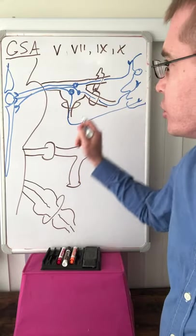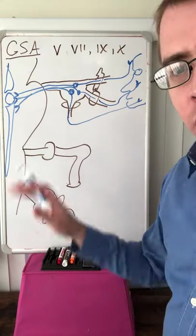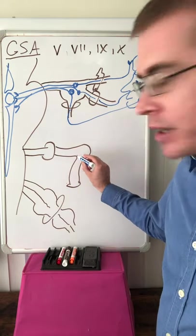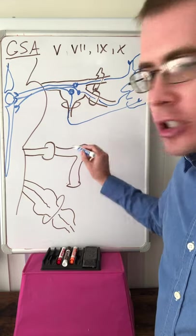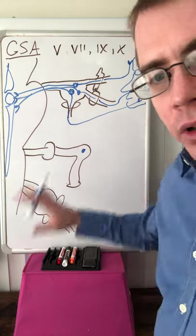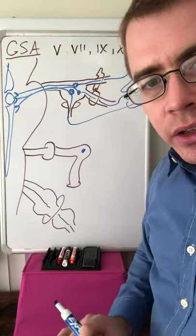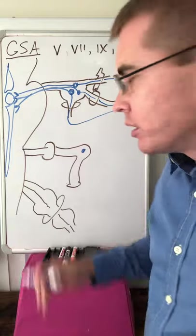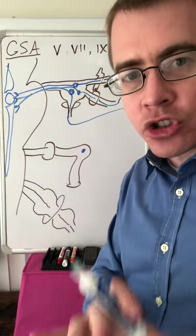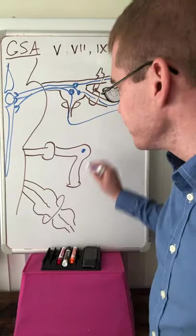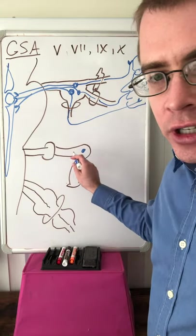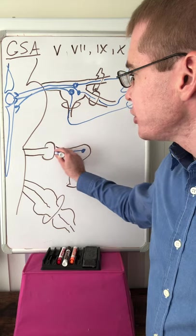Now, so we've done trigeminal. Now we've got to do facial. So the cell bodies located in geniculate ganglion. So when you're doing this, label all of these things. Do it from scratch, like I'm doing it. Don't stare at your notes. Because this is how you test your memory and how you reinforce your memory.